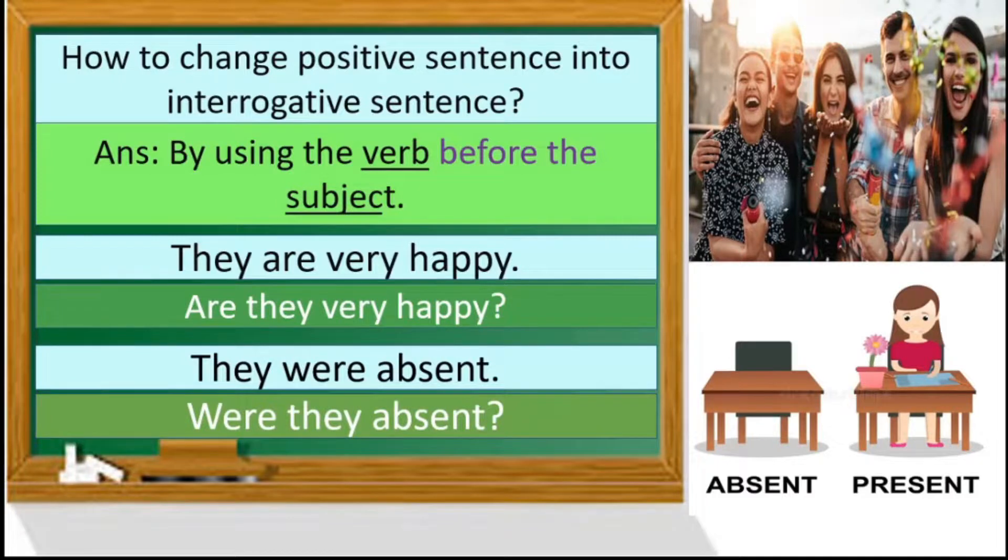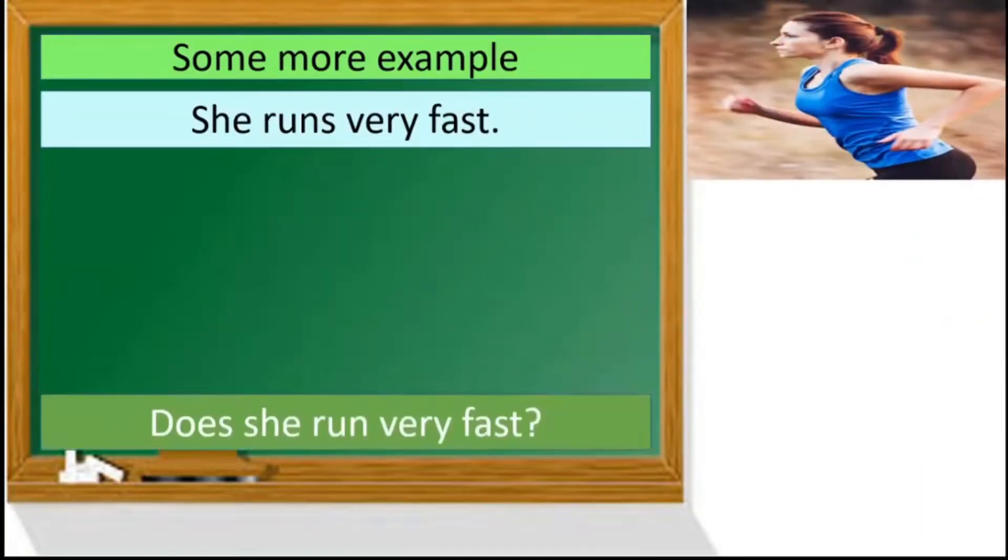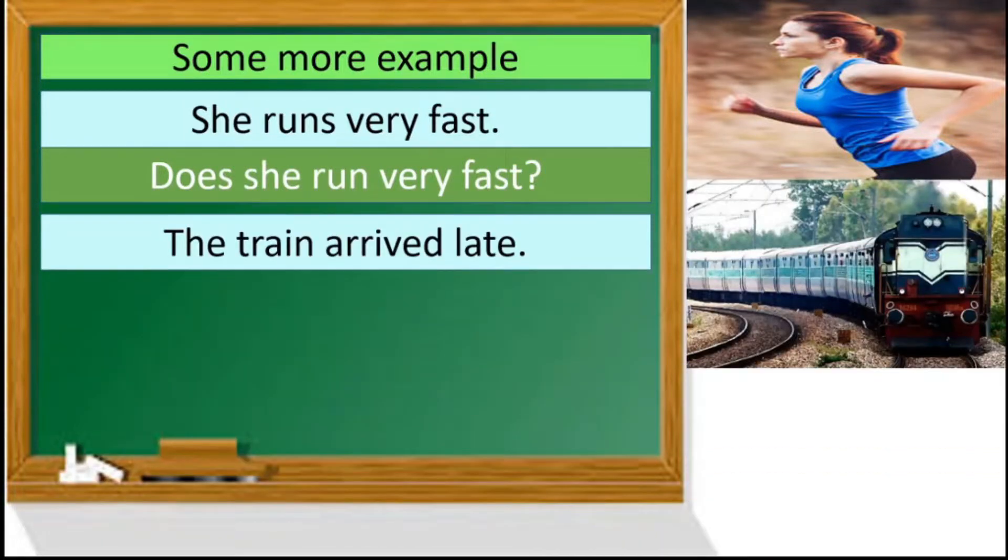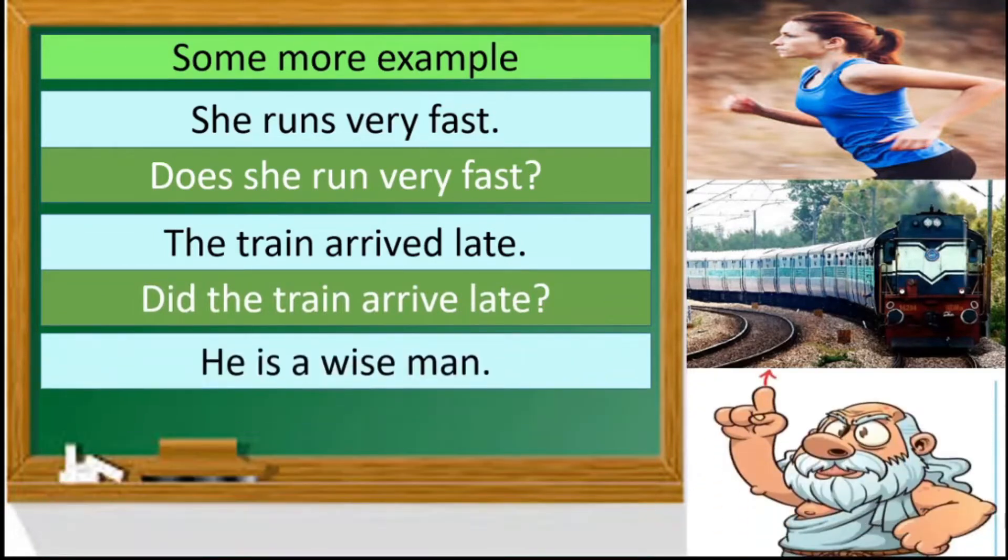Some more examples. She runs very fast. Does she run very fast? The train arrived late. Did the train arrive late? He is a wise man. Is he a wise man?